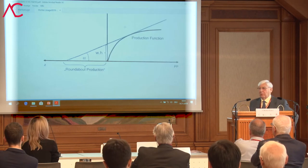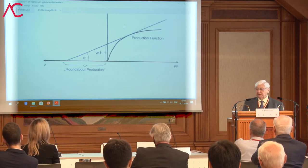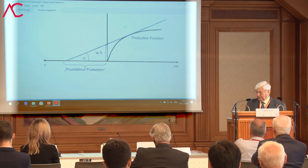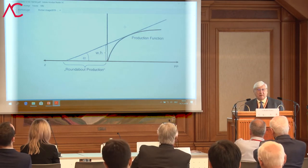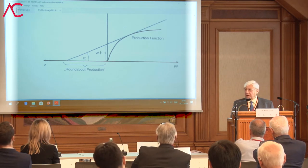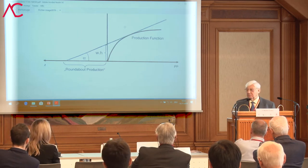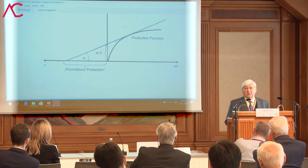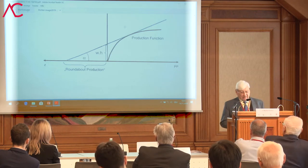So let's start with Böhm-Bawerk and his famous two-volume work, Capital and Capital Interest. I'm referring to the second part, the Positive Theory of Capital, which was a provocative title at the time and catapulted Böhm-Bawerk himself and the Austrian school to international fame. Written in 1889 in Innsbruck, it was translated within two years, both in London and in New York, into English. So it made the Austrian school international.